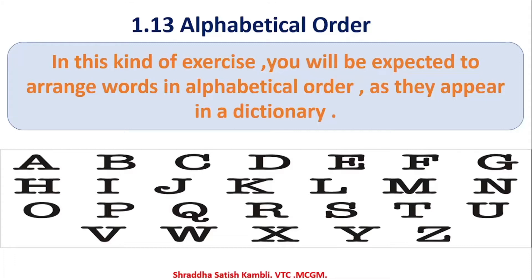Once you know the order of the letters in the alphabet, you will be able to arrange words given to you. For example, if there is a word with H and if there is a word with M, which word will you write first? You will write the word with H first and M later, because H comes first in the alphabet and M comes later. If you have used dictionaries, this is very easy for you. You just have to be very careful while reading the words, especially when the first or second letters are all the same.